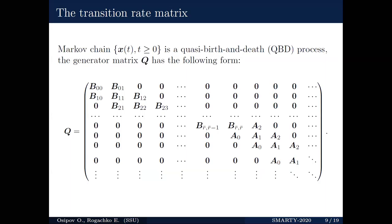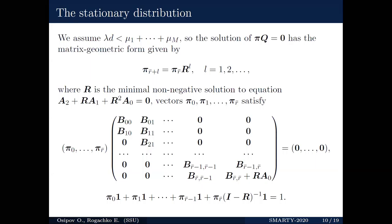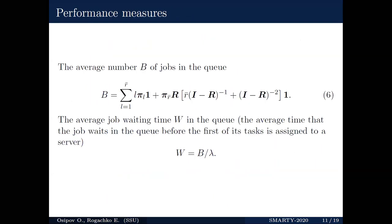Once the stationary distribution is computed, a variety of other performance measures may be obtained. For instance, you can see the average number B of jobs in the queue. The average job waiting time W in the queue is the average time that the job waits in the queue before the first of its tasks, I mean the tasks associated with the job, is assigned to a server. This value can be found by Little's law.